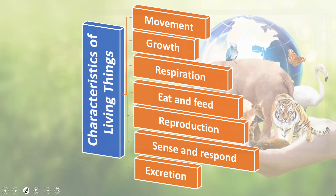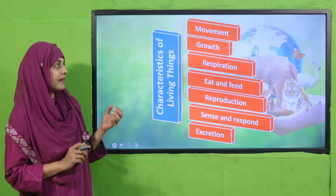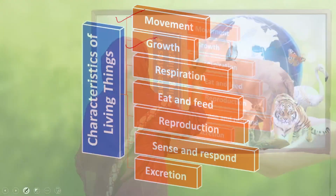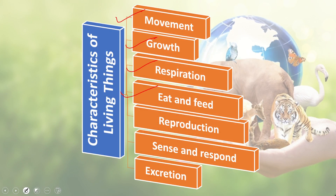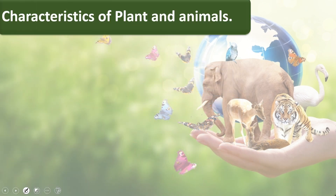The characteristics of living organisms — plants or animals — are: movement, growth, respiration, eating and feeding, reproduction, sense and respond, and excretion. These are the different characteristics of living things, whether plants or animals.